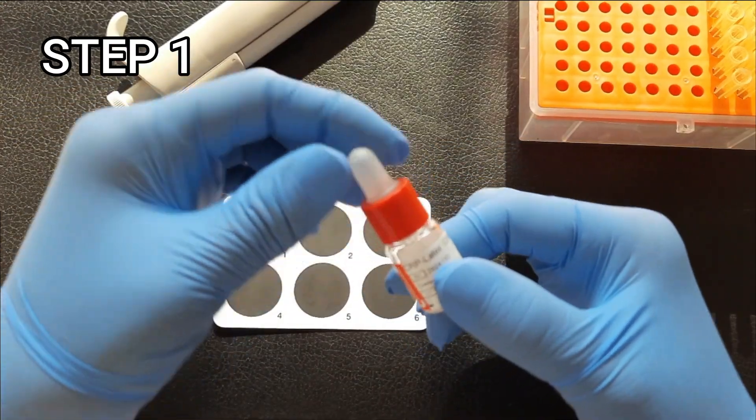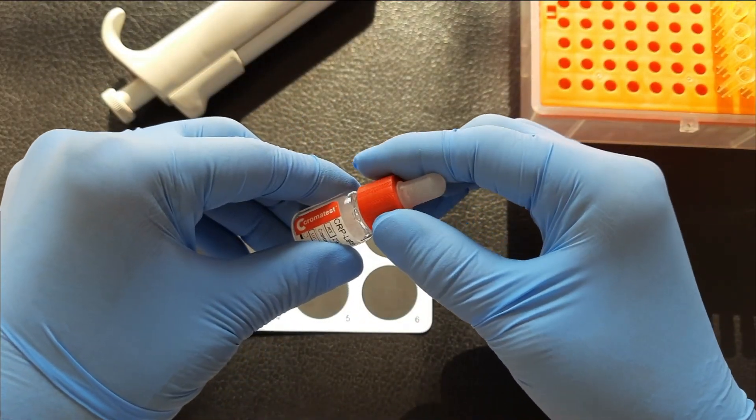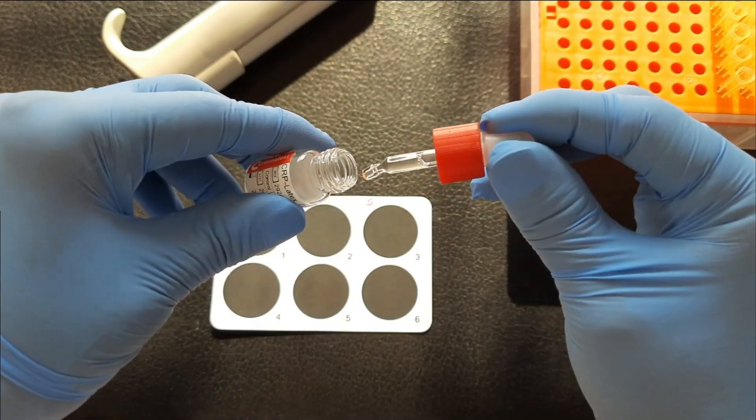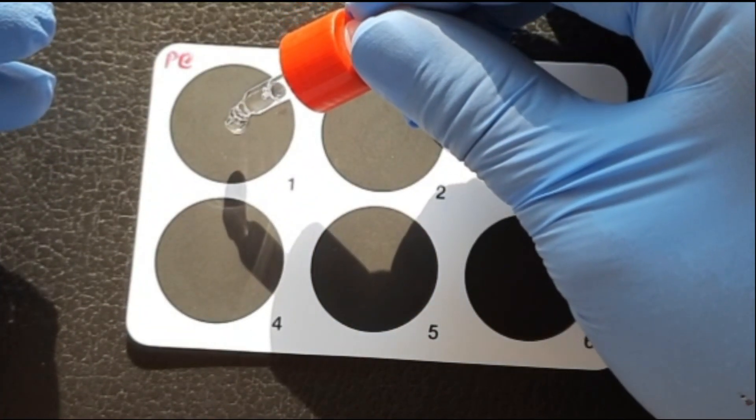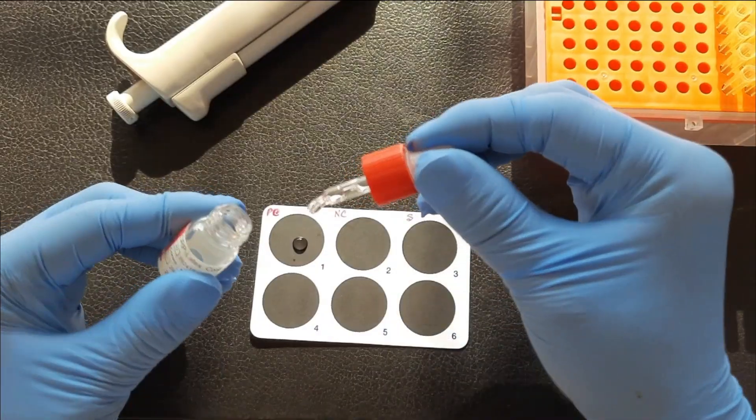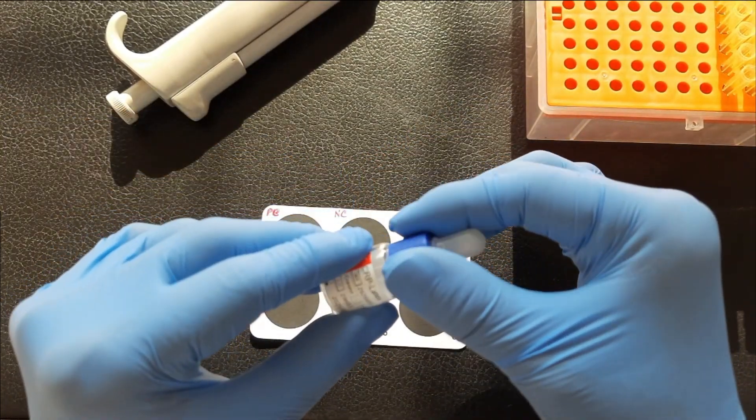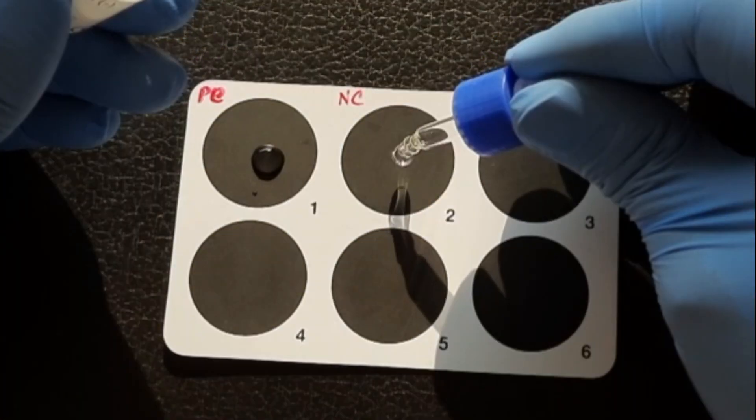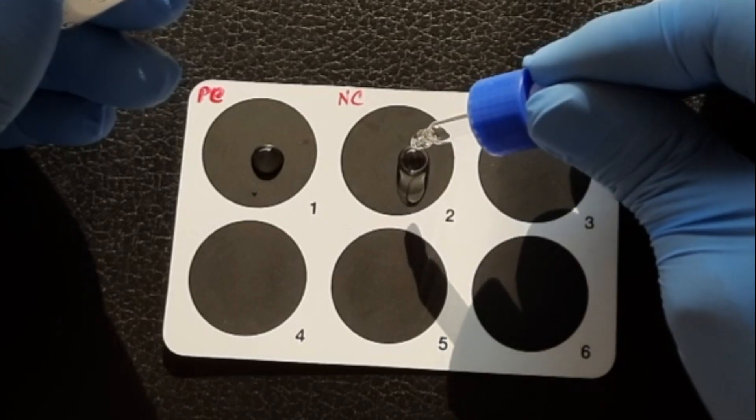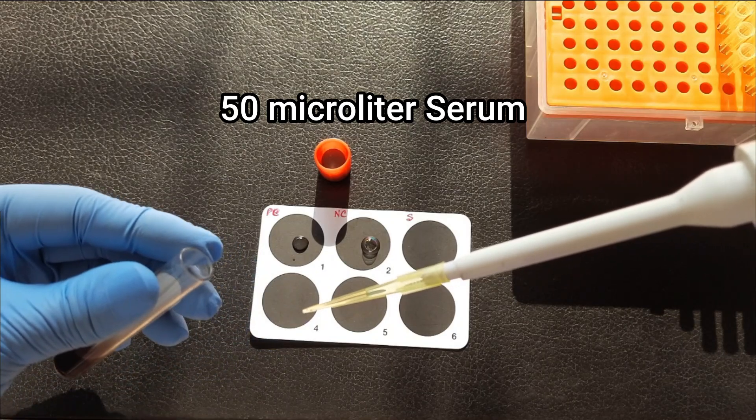Step 1. Place one drop of positive control on circle 1 of the test card, labelled as PC. One drop of negative control serum on circle 2, labelled as NC, and 50 microliters of serum on circle 3, labelled as S.